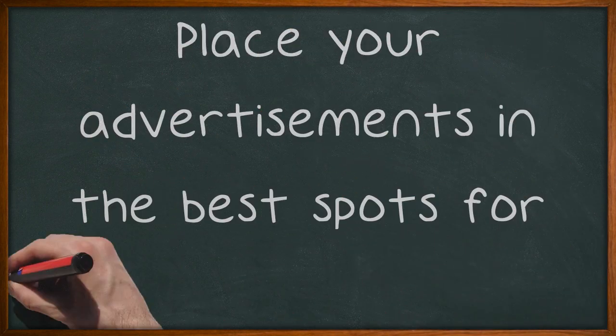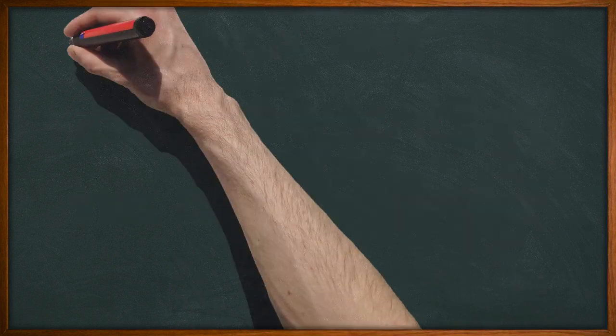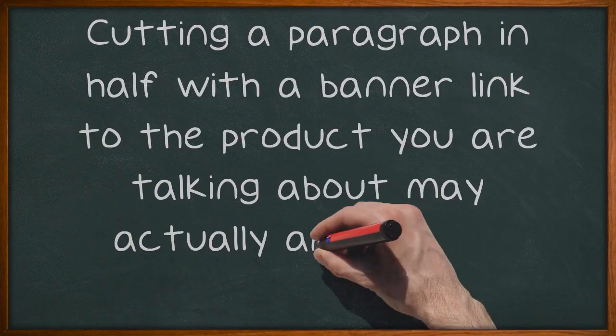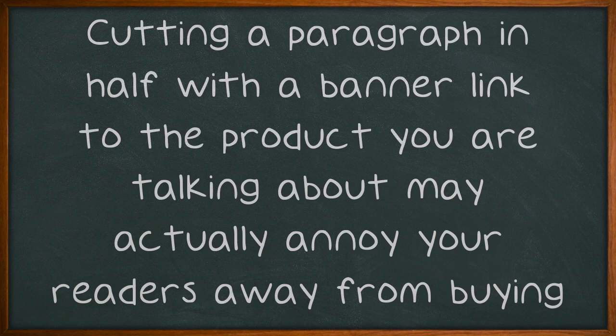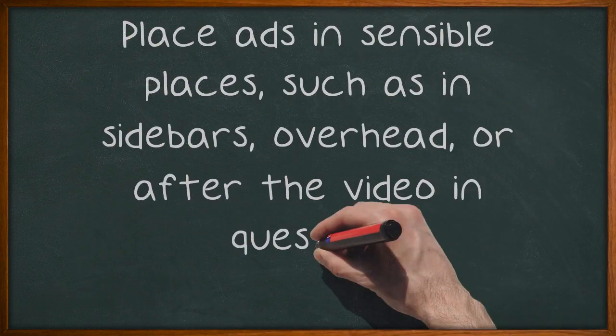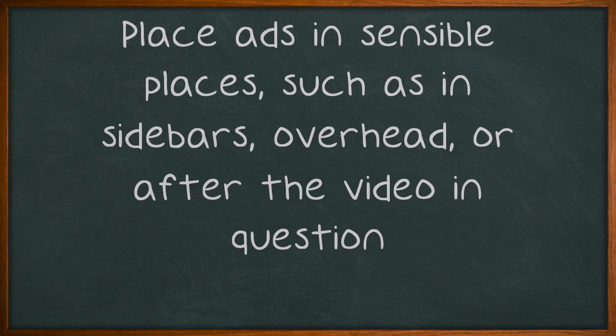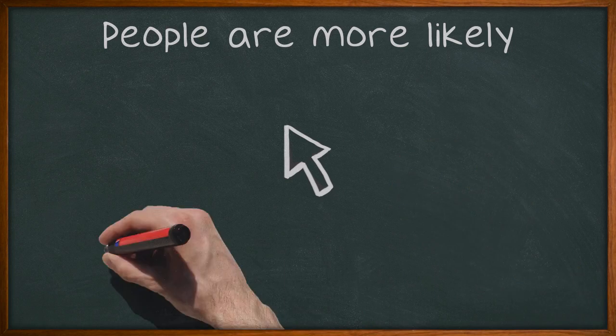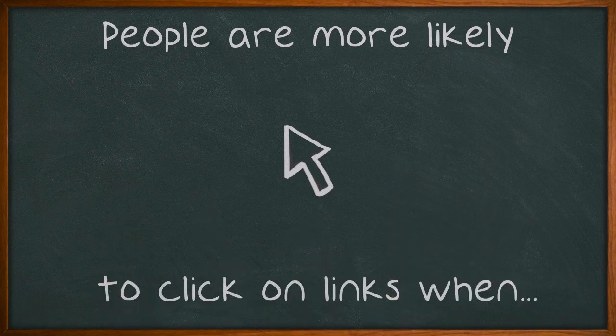Place your advertisements in the best spots for them. Cutting a paragraph in half with a banner link to the product you are talking about may actually annoy your readers away from buying it. Place ads in sensible places, such as in sidebars, overhead, or after the video in question. People are more likely to click on links when they don't feel pressured to do so.